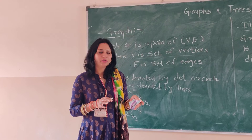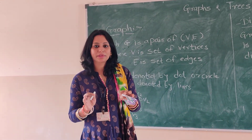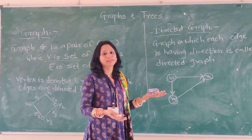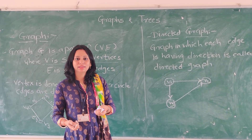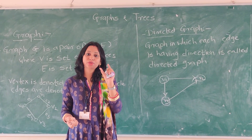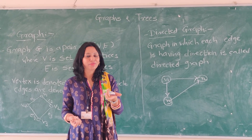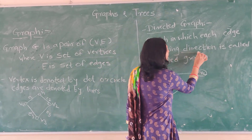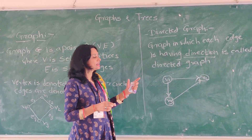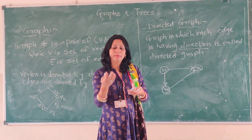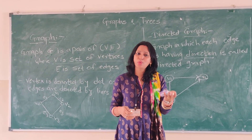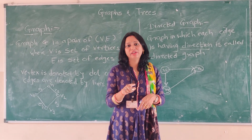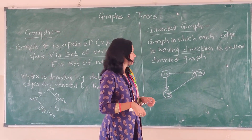Now there are various types of graph. The first type you should know is the directed graph. As its name implies, directed means there should be direction in the graph. A directed graph is one in which each edge has a particular direction — either inward or outward. All edges must have a direction, then it is called a directed graph.